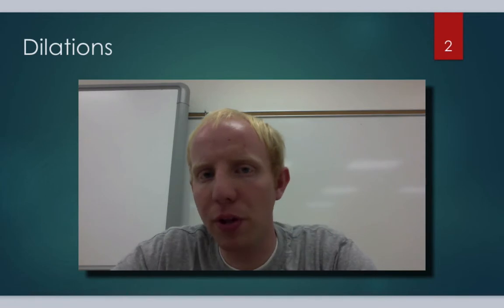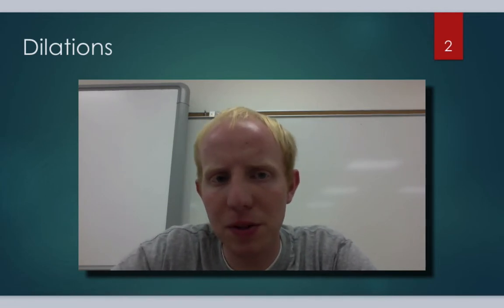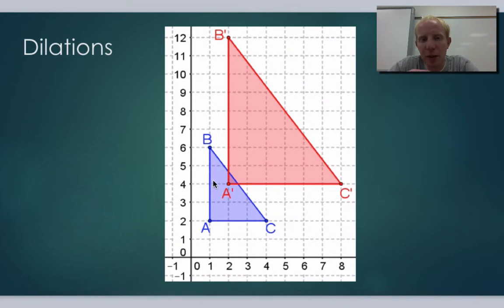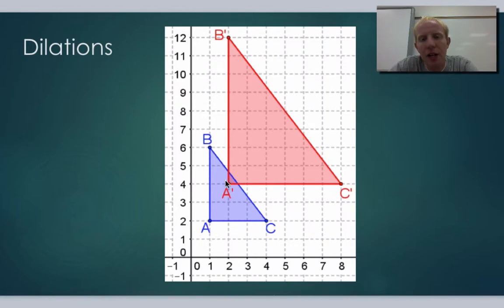Dilation is both an idea and a tool that we'll use in math to help us solve similarity problems. A dilation is when we have a shape — for example, triangle ABC — and we want to make it either bigger or smaller, but we want to keep the same properties of the shape, meaning it has the same angles and the side lengths have the same ratios to each other. It's basically just the same shape, but bigger or smaller.